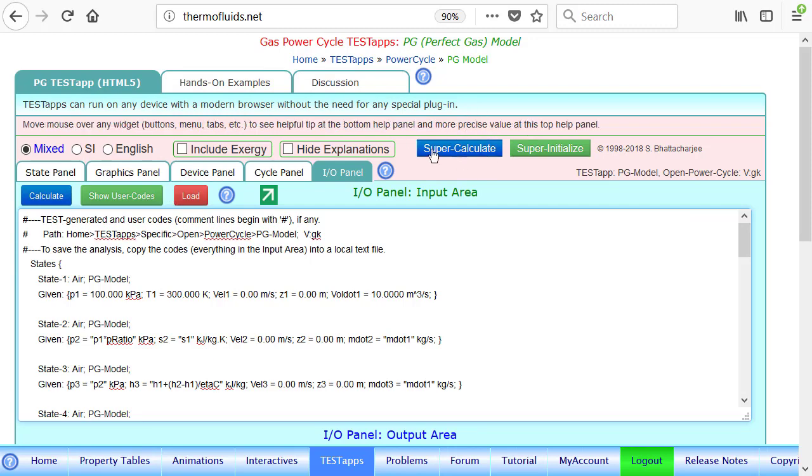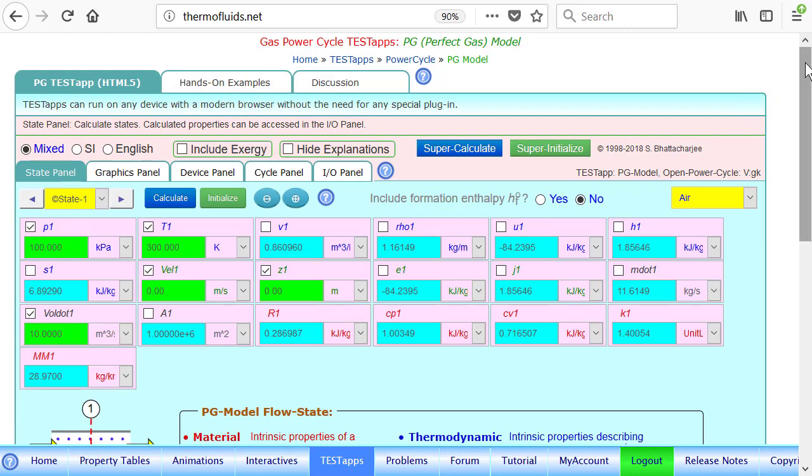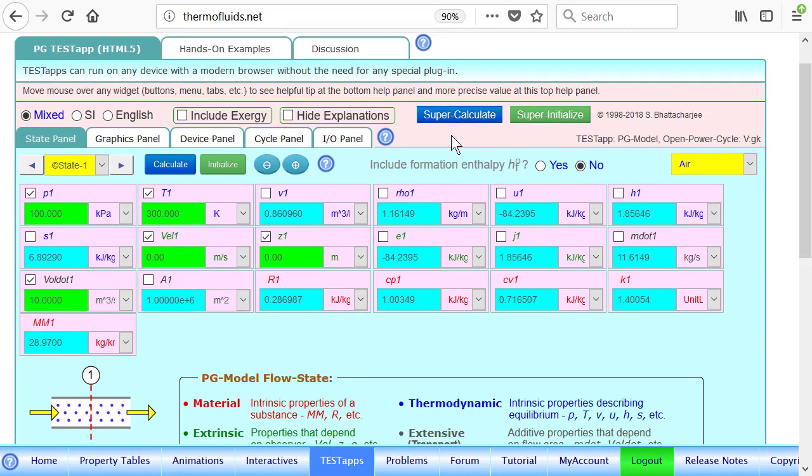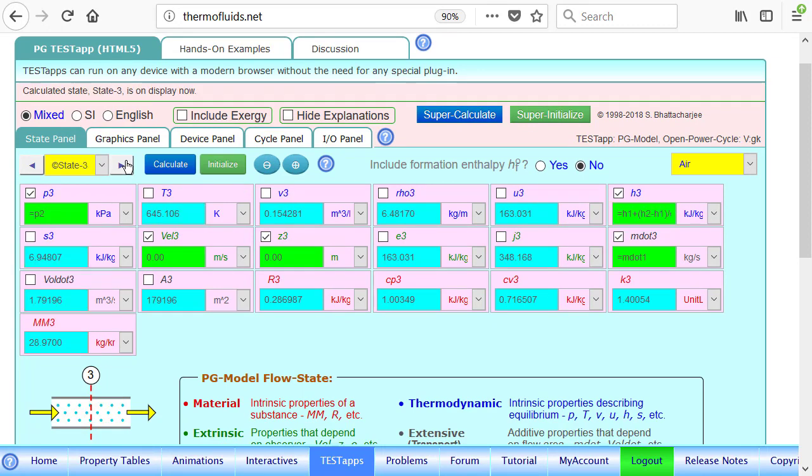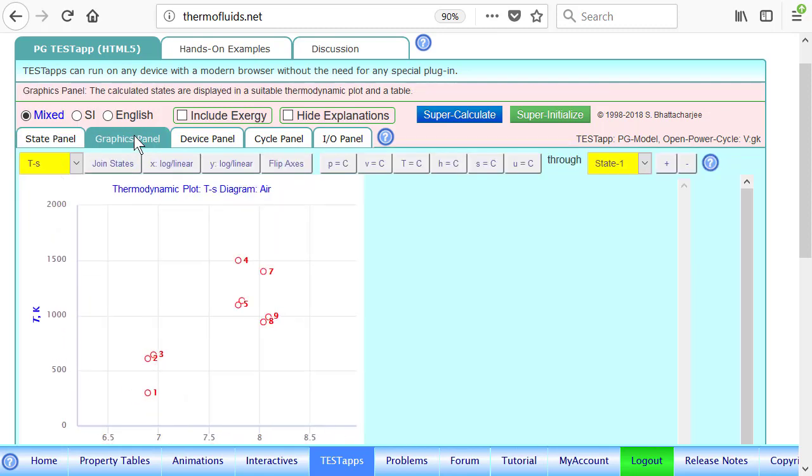Okay, so each state, as you can see—this is state 1, 2, 3, 4, etc.—are all calculated. As you can see, state 2 uses the pressure ratio to find the pressure. This is the first compressor.